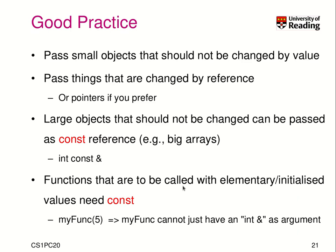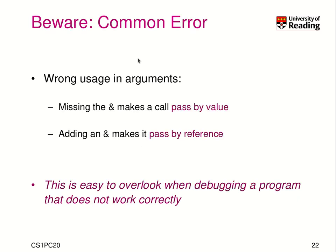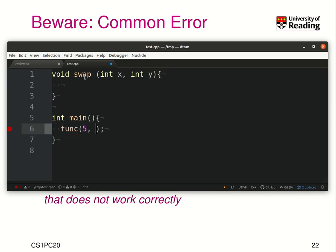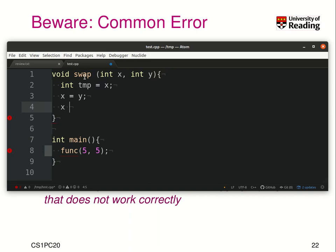You will understand this more with practice during the tutorials, but be careful that you understand what is the reference and what is the value, because these are common errors. When you write an argument in the formal parameters and miss the ampersand, then you have pass by value; if you add an ampersand, then you have pass by reference. When debugging a program that does not work correctly, it's very easy to overlook this. For example, if I think about my swap function and I had missed the ampersand and just had x and y, then this function would never be able to swap my data — it would only change the values in the current stack frame, as we talked about with the stack.